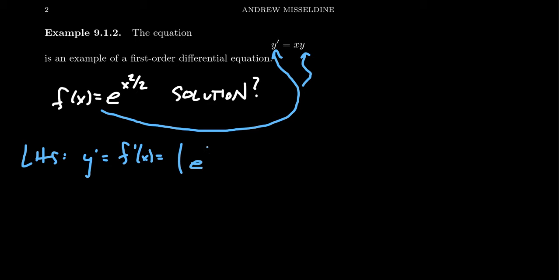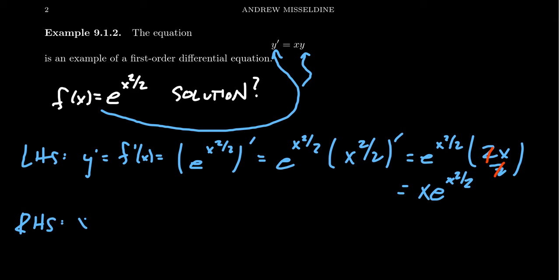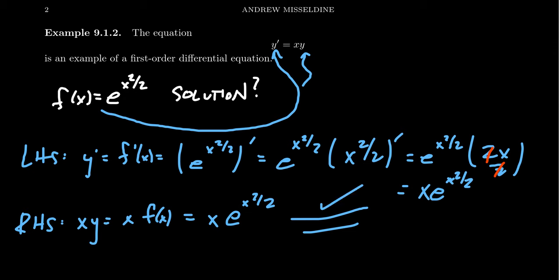By the usual rules of derivatives, because we have an exponential expression, the outer derivative will just spit back out itself — e to the x squared over 2. But then we have to multiply it by the inner derivative of x squared over 2, which by the power rule gives us 2x over 2. The 2s cancel, and we end up with simply x times e to the x squared over 2. Comparing this to the right-hand side, which is supposed to be x times Y — if you take x times F of x, you get x times e to the x squared over 2. You see that the left-hand side and the right-hand side are equal to each other, so this is a solution to our differential equation.